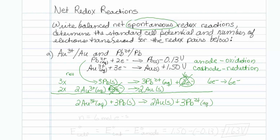The number of electrons transferred, represented by N, is equal to six moles of electrons — the number needed to balance the reaction. The standard cell potential is always equal to E cathode minus E anode, which equals 1.50 minus negative 0.13, giving 1.63 volts.